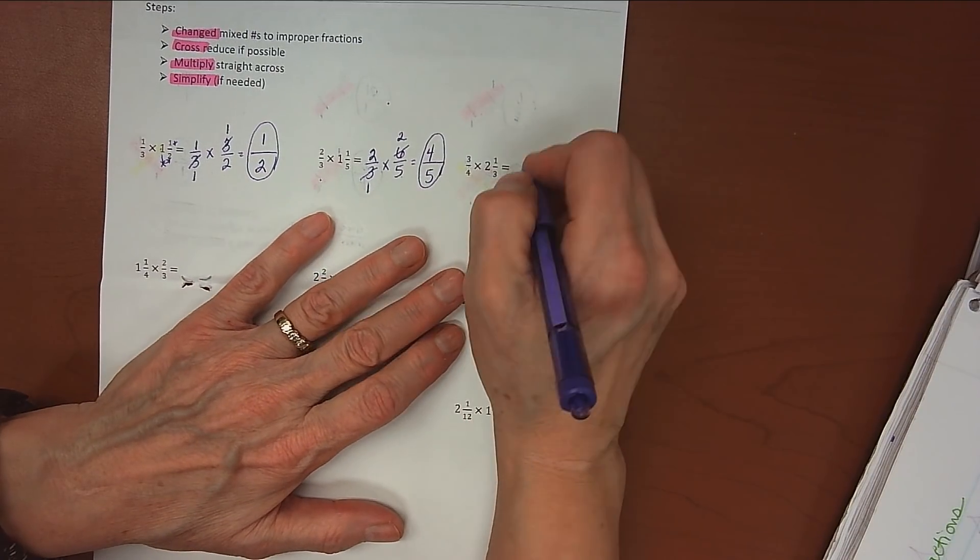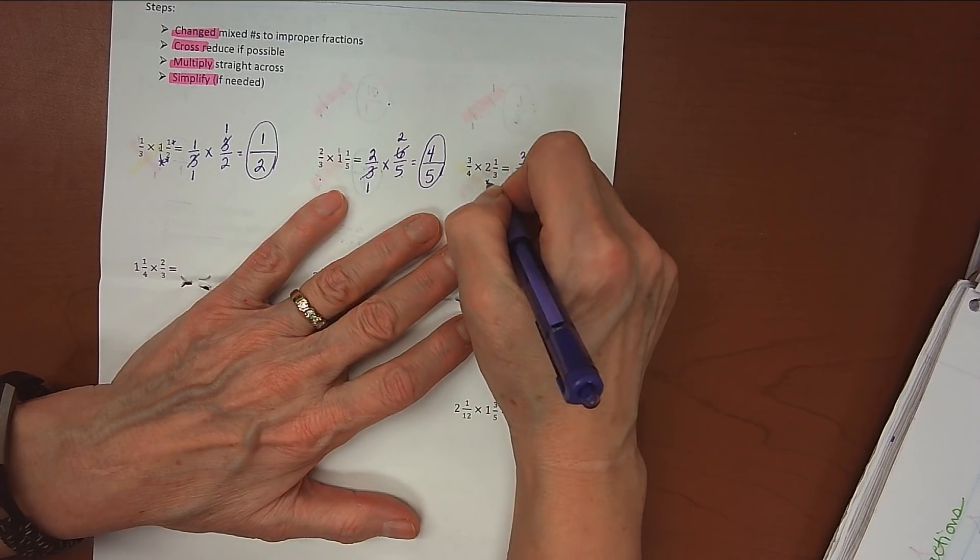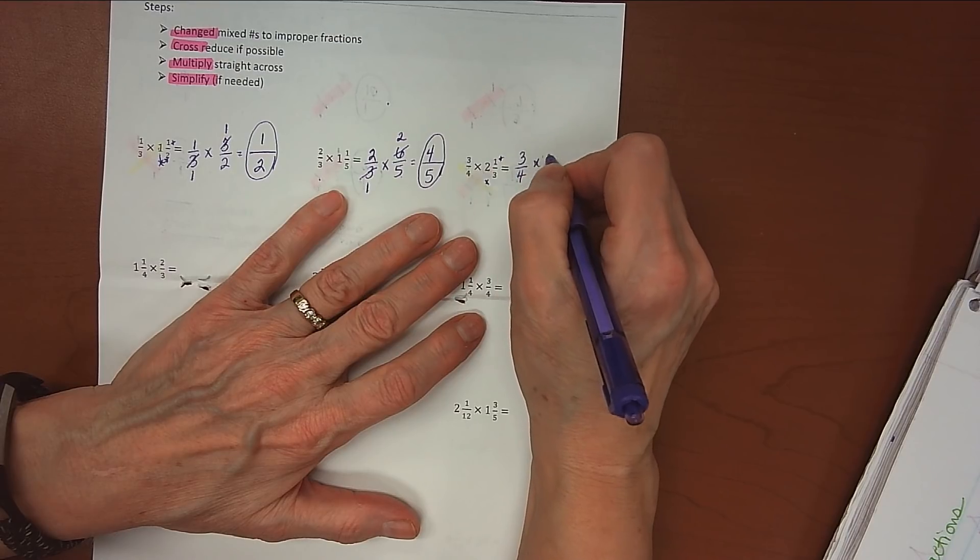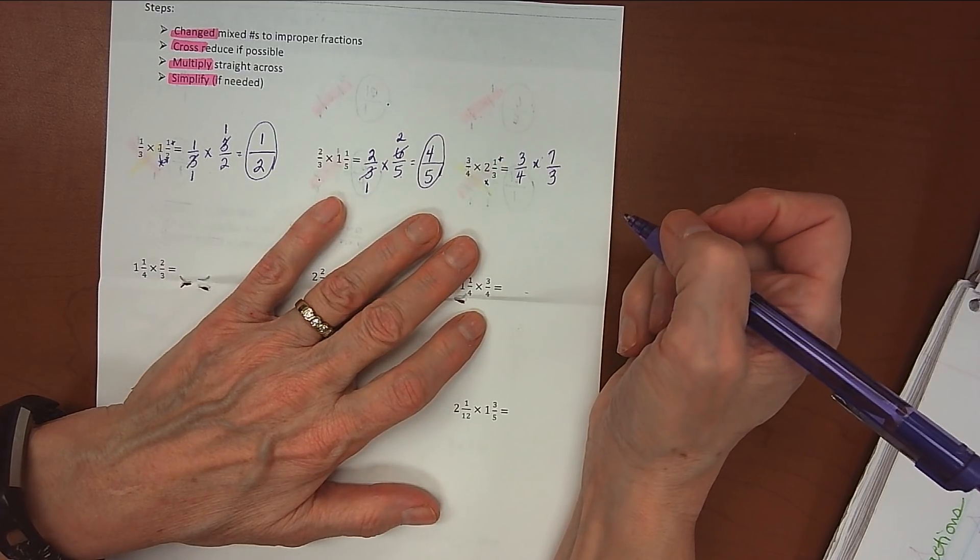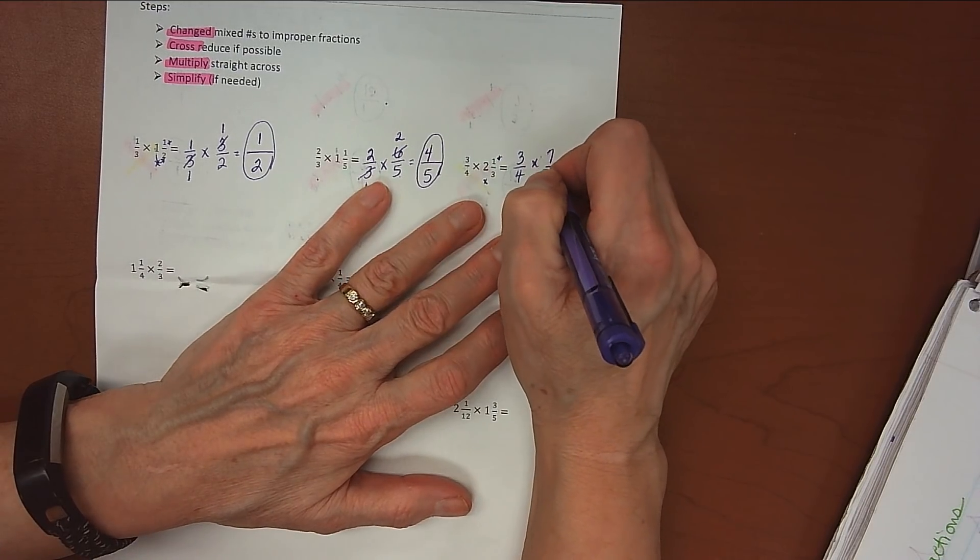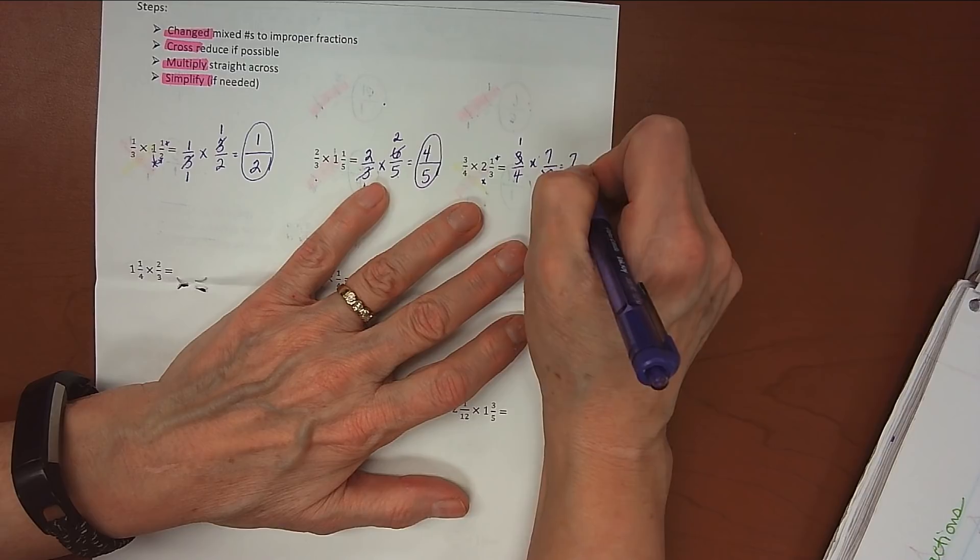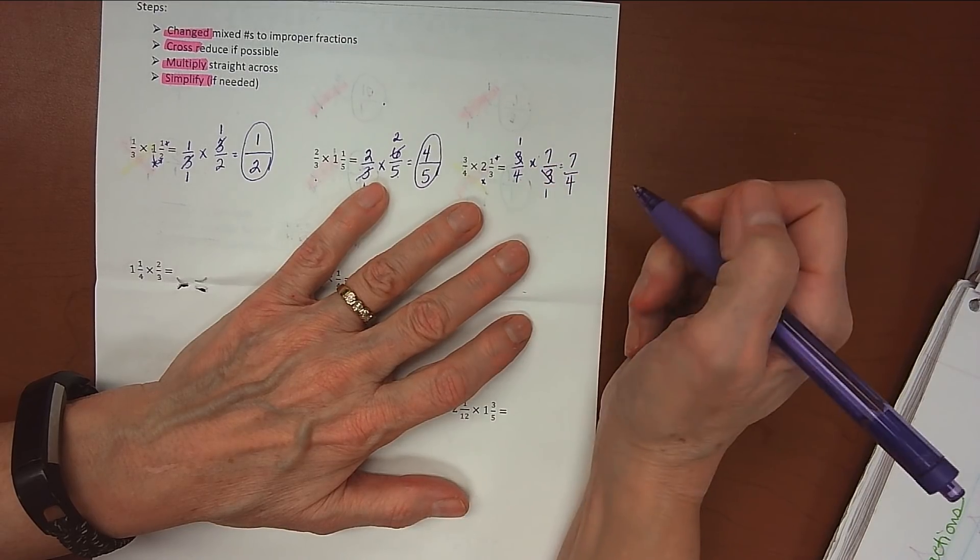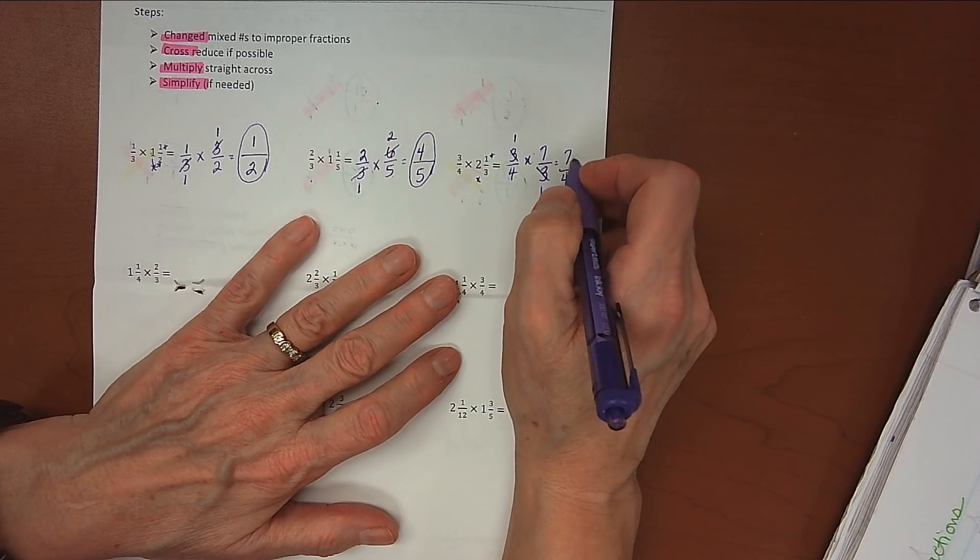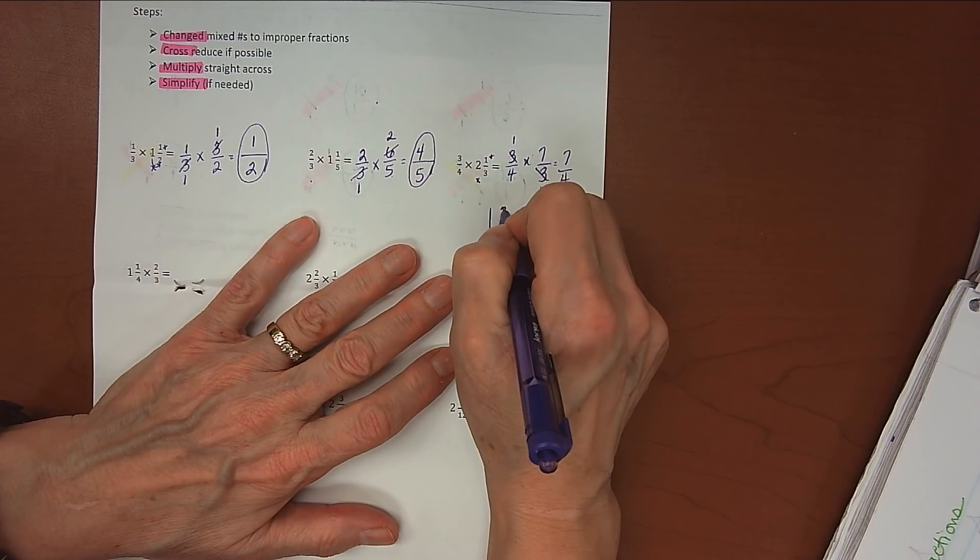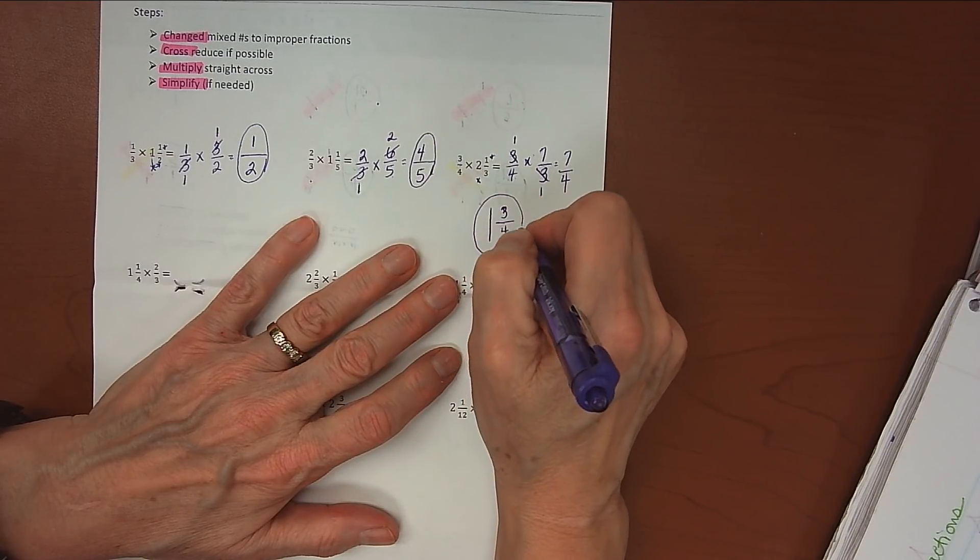Alright, 3/4 doesn't have to change, it's a fraction. 2 times 3 is 6, plus 1 is 7, so that's 7, and the denominator stays the same, 7/3. Looking to see where we can cross-simplify, 3 divides by 3, 3 divides by 3. 1 times 7 is 7, 4 times 1 is 4. Just a reminder that we want to change these improper fractions to mixed numbers, so 4 divides into 7 once with 3 left over. So that minus 4 is 3/4. So our final answer is 1 and 3/4 on there.